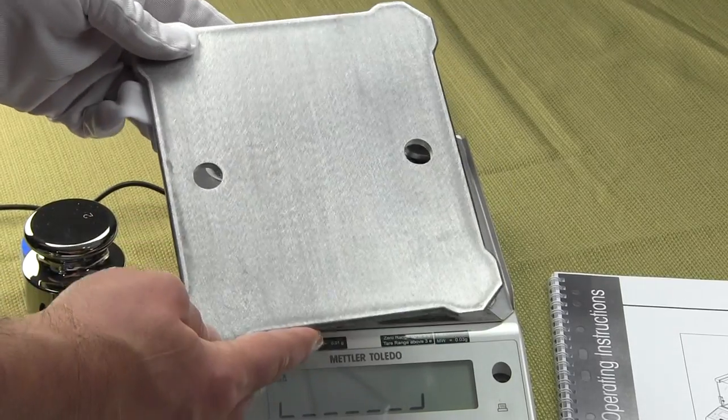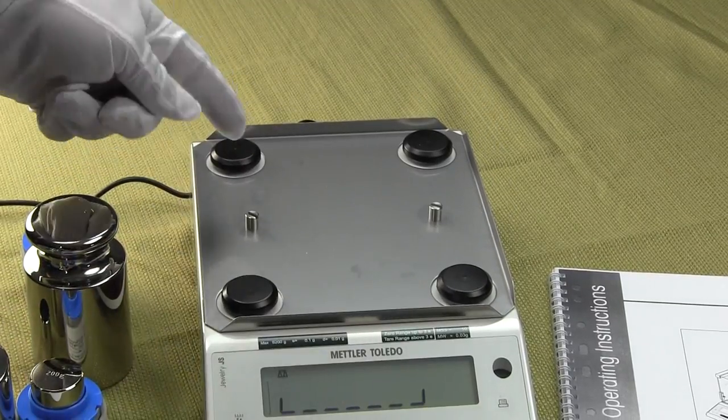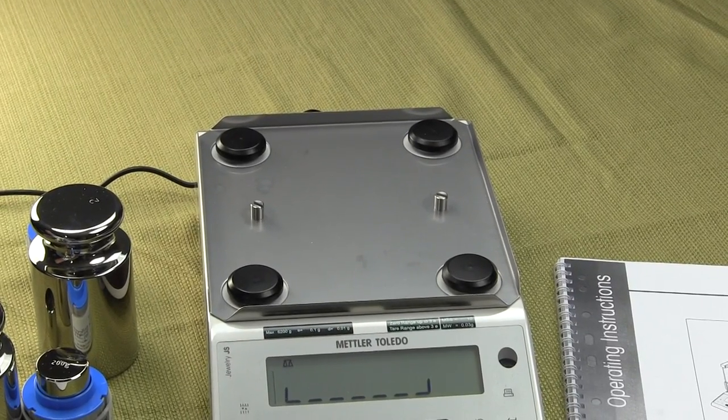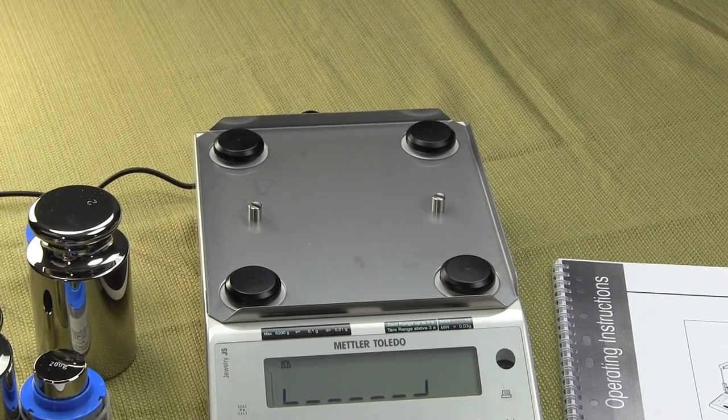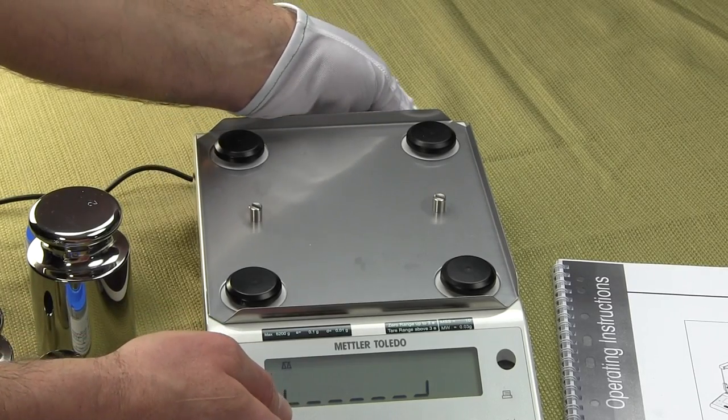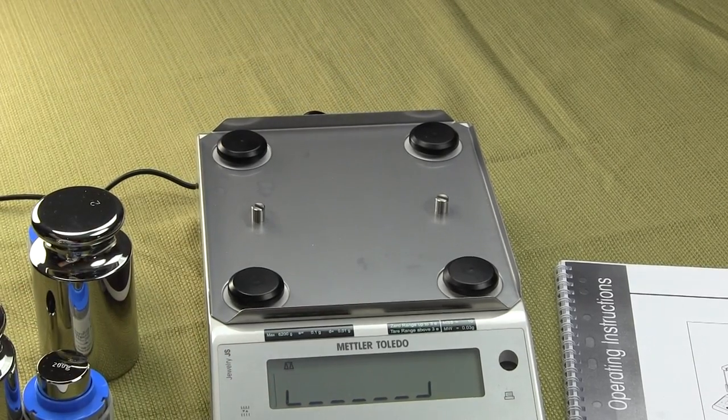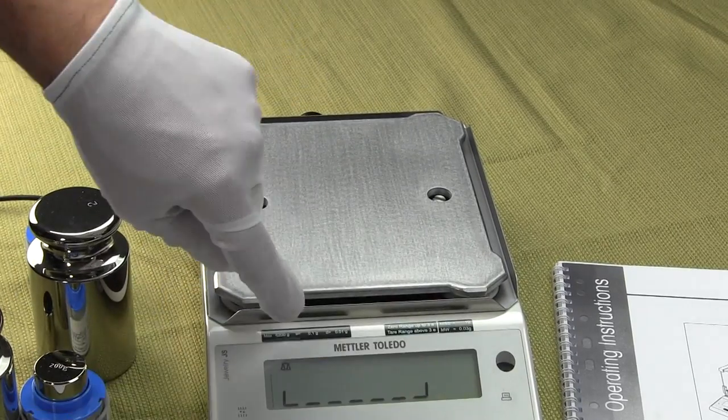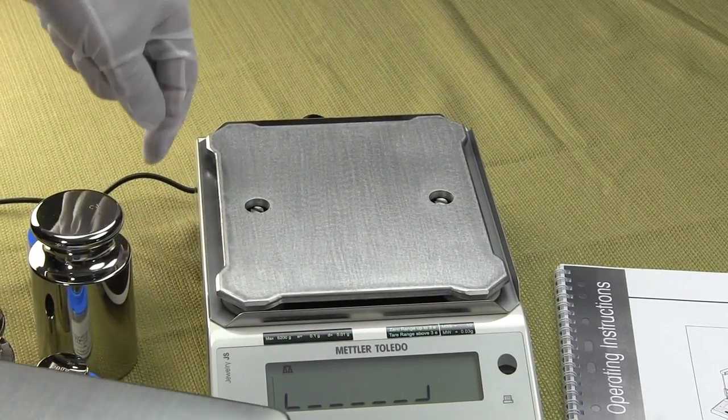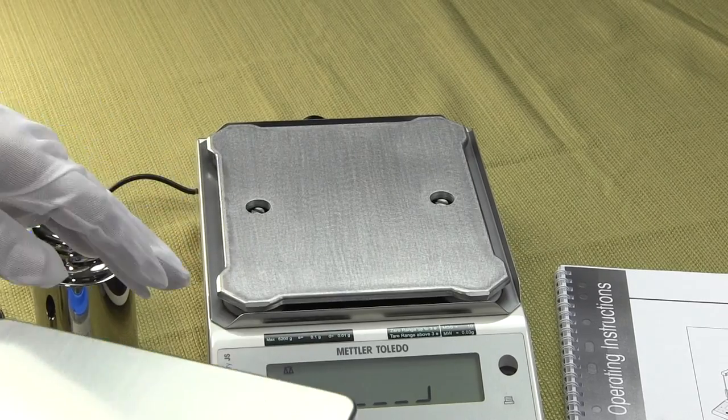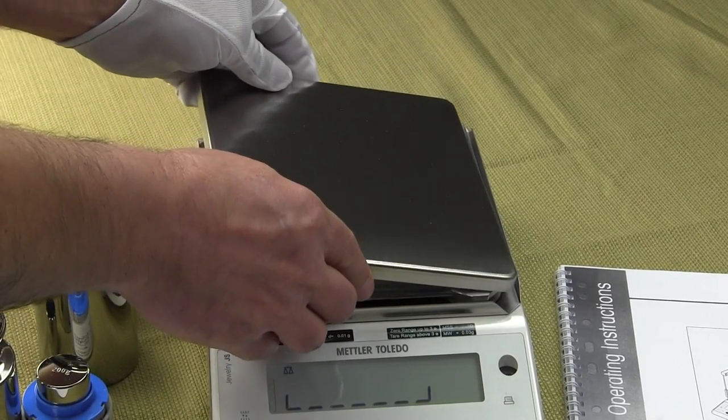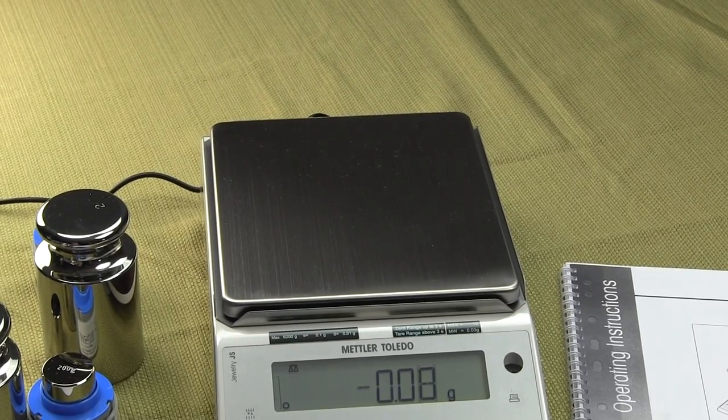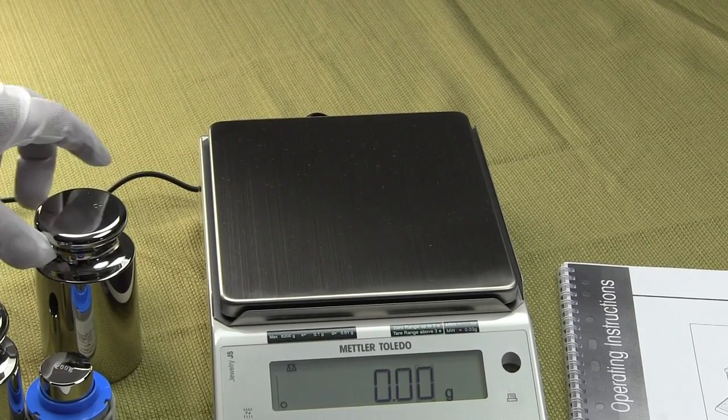This is your pan support and you'll notice you have your four spiders here that transfer the weight. Let me go over some of the features on the balance itself. This here is what they call a windshield. It prevents any air from going underneath the platform and allows the balance to be within its tolerance. The balance is pretty simple to use.